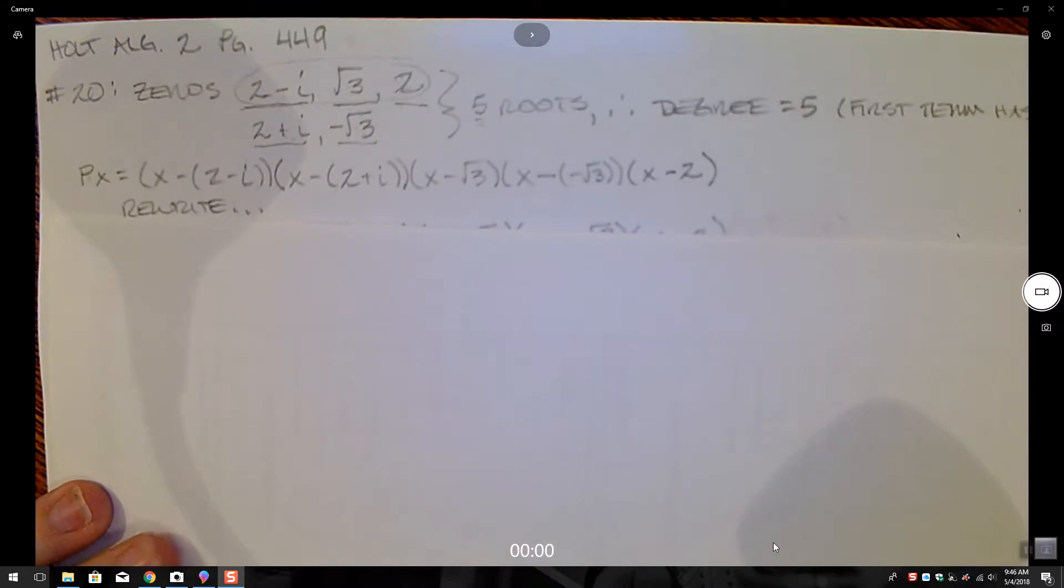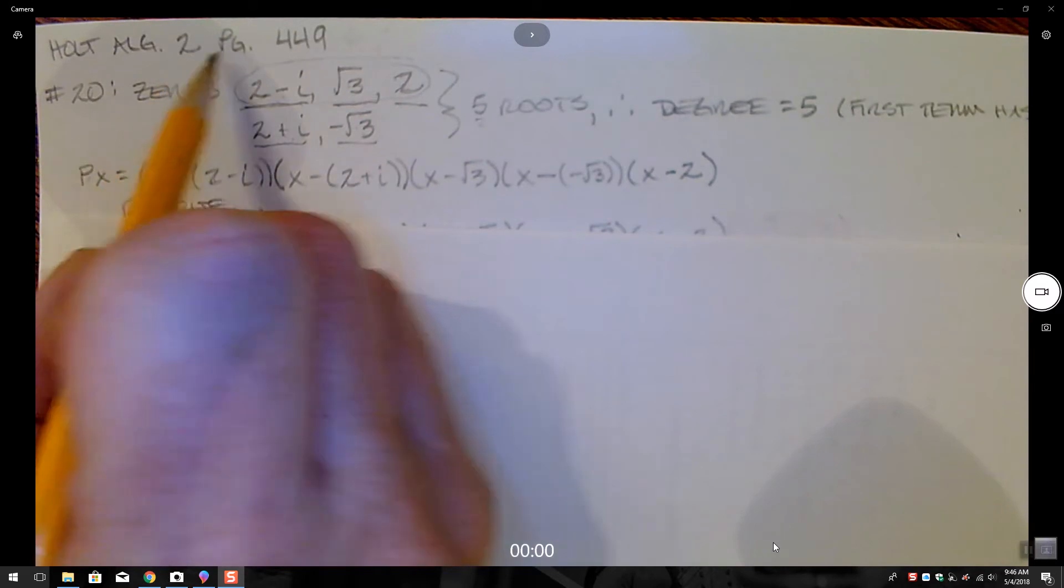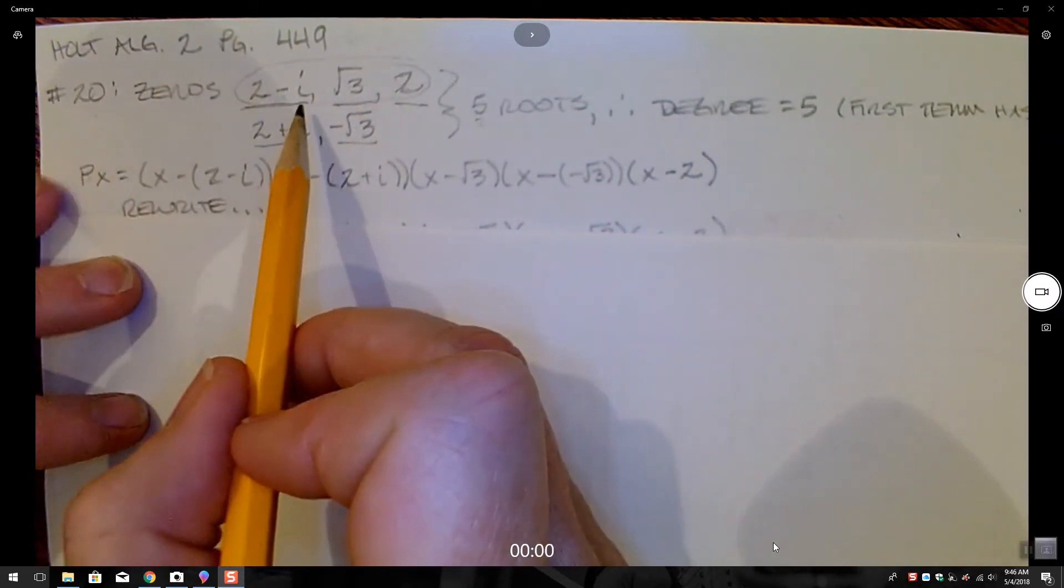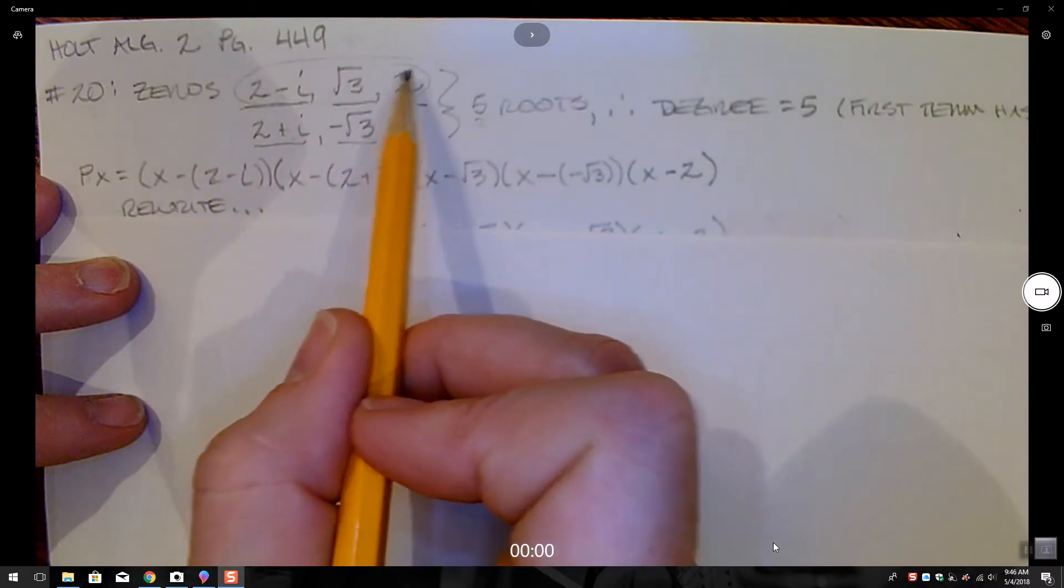All right, I think I may have this problem resolved now. This is again the Holt Algebra 2 book, page 449, problem 20, and we're finding the polynomial that has roots 2 minus i, root 3, and 2.